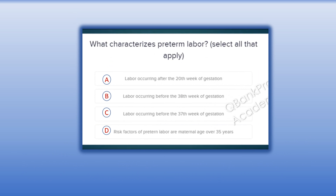What characterizes preterm labor? Select all that apply. A. Labor occurring after the 20th week of gestation. B. Labor occurring before the 38th week of gestation. C. Labor occurring before the 37th week of gestation. D. Risk factors of preterm labor include maternal age over 35.